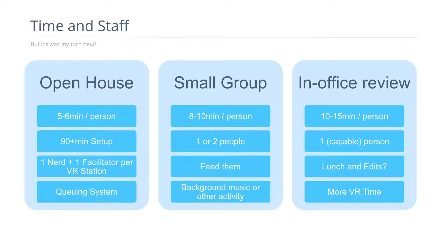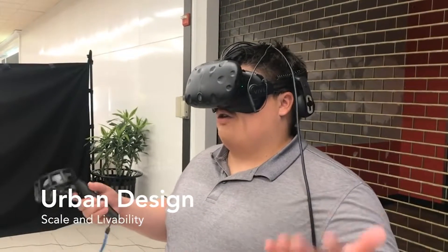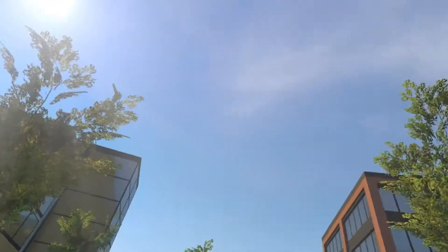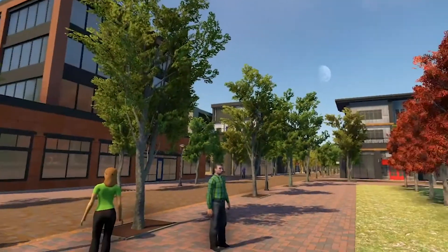For the in-office review, one person can handle it and give the client a lot of time inside the headset. The strategy I've used is to get people in there, let them review the work to date, and feed them — food is always helpful at all of these events. During that time, you can usually make a lot of the edits they've suggested in the model, going through a whole review-and-revise cycle over a lunch break and showing progress immediately so people see the revised model the same day. That's a very powerful experience.